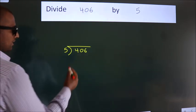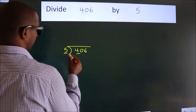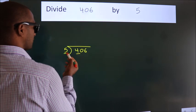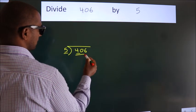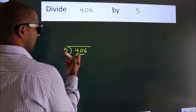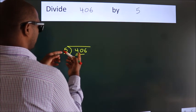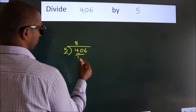Next. Here we have 4, here 5. 4 is smaller than 5, so we should take two numbers, 40. When do we get 40 in 5 table? 5 eights, 40.